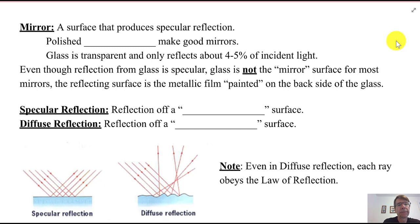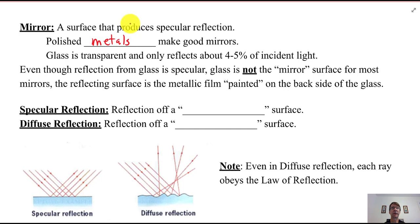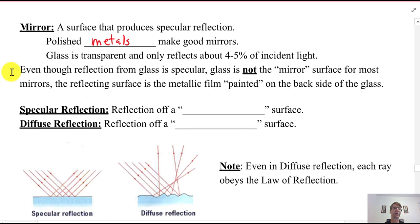Polished metals make good mirrors. Technically, glass is not a good mirror surface. It does reflect in a specular fashion, and glass is used in most mirrors, but it's not really the reflective surface of the mirror. There's usually a metal paint on the back of the glass. Glass is a transparent medium that only reflects about four to five percent of incident light.